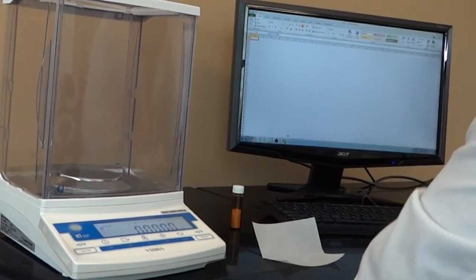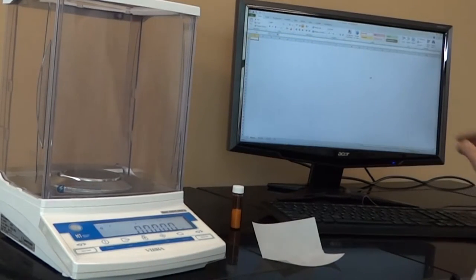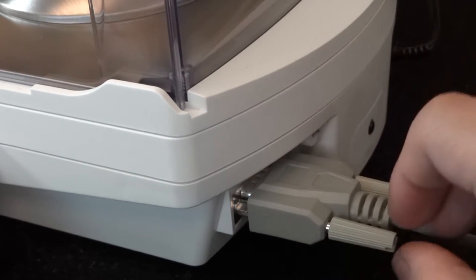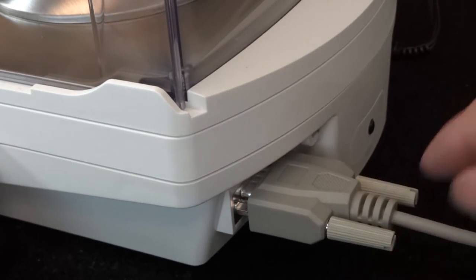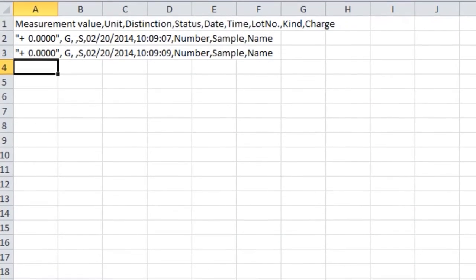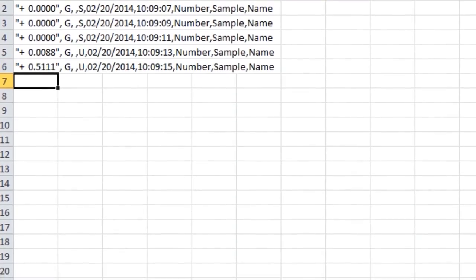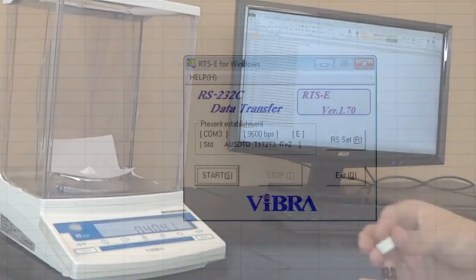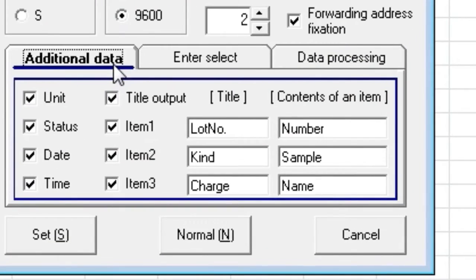All Vibra units come with downloadable wedge software. When the balance is connected to the computer via serial RS-232 or USB, the data will be transferred to the text entry software of your choice. It functions as if the weighing data is typed directly through your keyboard. The output can be customized with many labels.